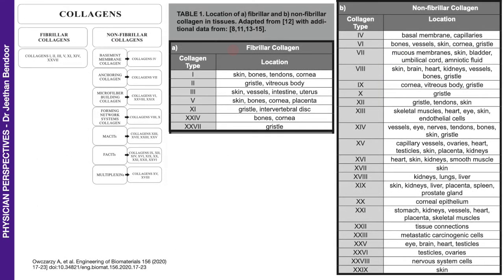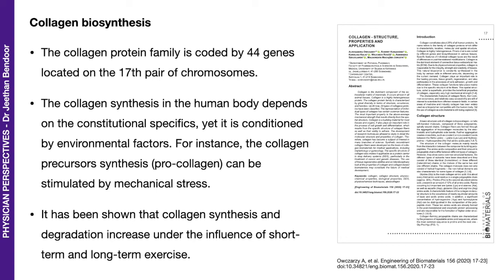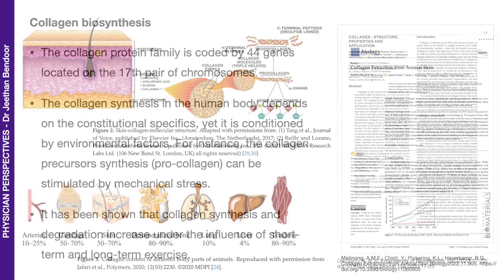Here are the fibrillar and non-fibrillar collagen types — 29 in total — spread all over the body in very important locations. The collagen protein family is encoded by 44 genes, which is a large number. It has been shown that collagen synthesis and degradation increase under the influence of short-term and long-term exercise, so exercise plays a very important role in the formation and maintenance of collagen.